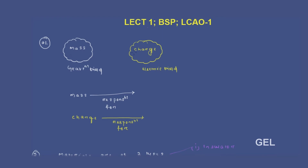We know mass and charge. What are these? These are the fundamental properties of a particle. Why are we talking about the fundamental property of a particle? If there is a mass M, its influence creates around itself a gravitational field, and if there is a charge Q, its influence will be created around itself in the name of electric field.